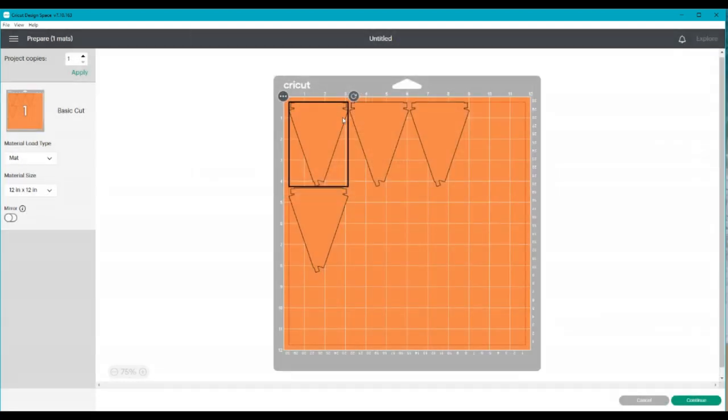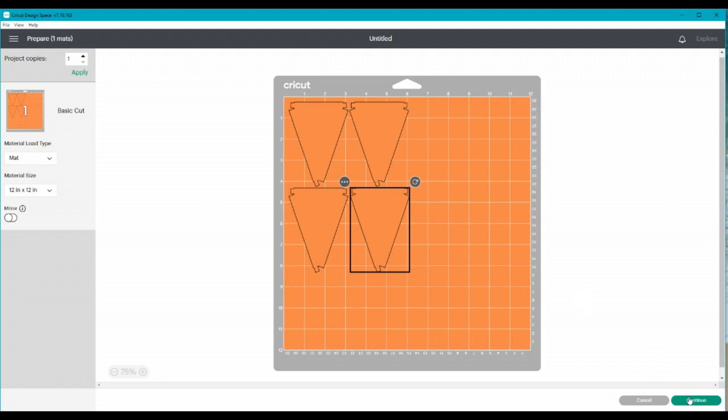I'm going to choose for any material for the mat and hit continue. Now you can see that if I had a 12 by 12 this would fit fine. I have an 8.5 by 11 so I'm going to move this down in order to make sure that it didn't go beyond eight and a half. And then I can hit continue.